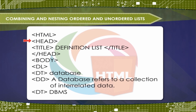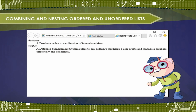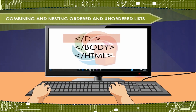Using the DL tag: tag HTML, tag head, tag title, tag DL, tag DT database, tag DD — a database refers to a collection of interrelated data. Tag DT DBMS, tag DD — a database management system refers to any software that helps a user create and manage a database effectively and efficiently. Close tag DL, close tag body, close tag HTML.